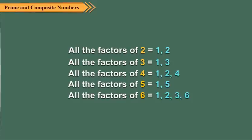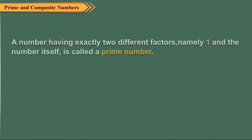You can see that 2, 3 and 5 have only two factors, namely 1 and the number itself. We call these numbers the prime numbers. So a number having exactly two different factors, namely 1 and the number itself, is called a prime number.